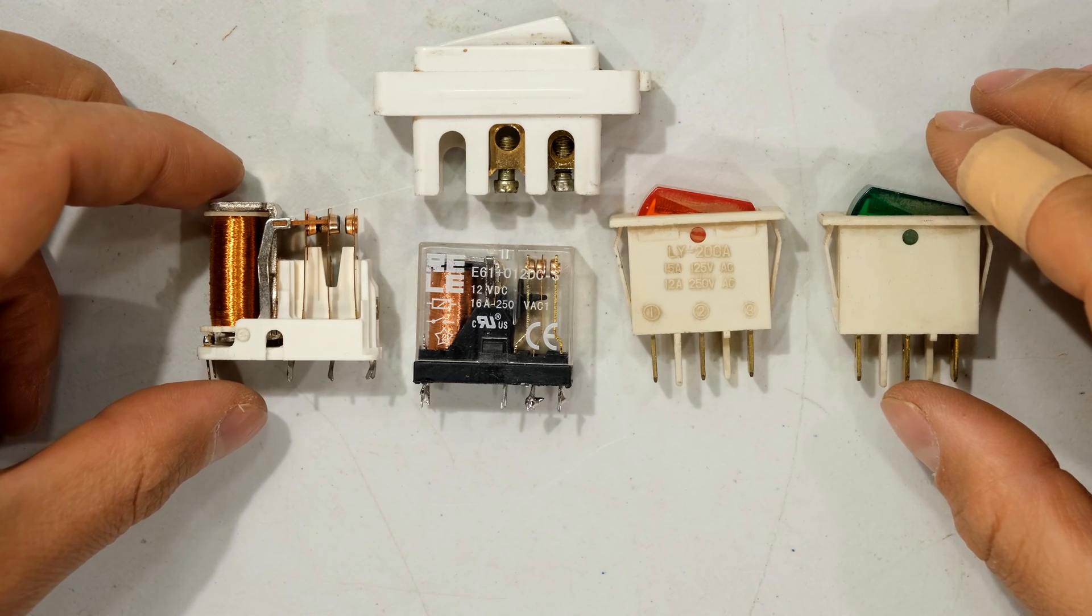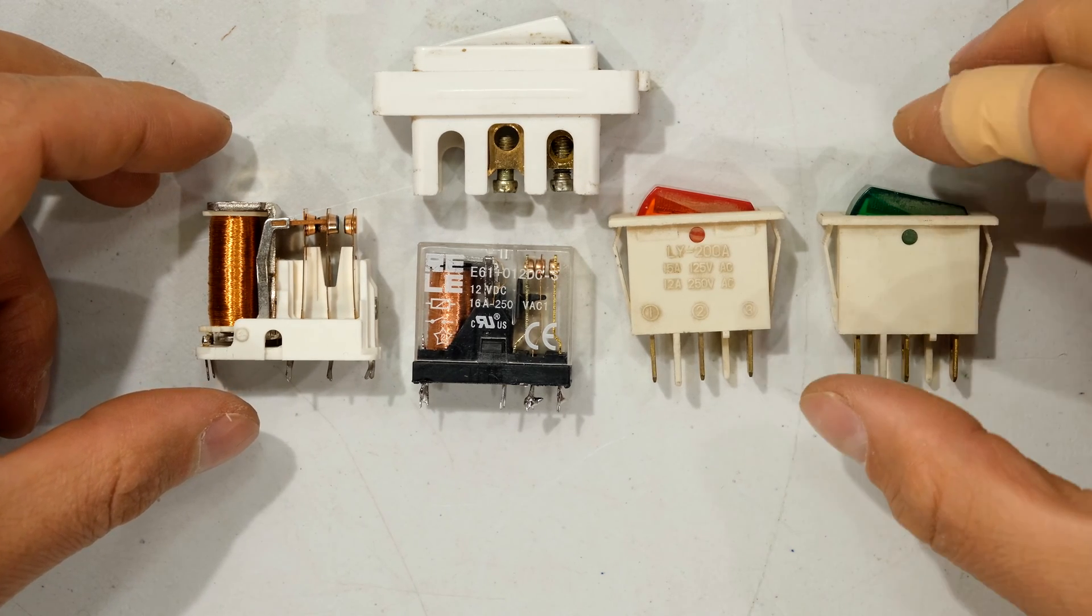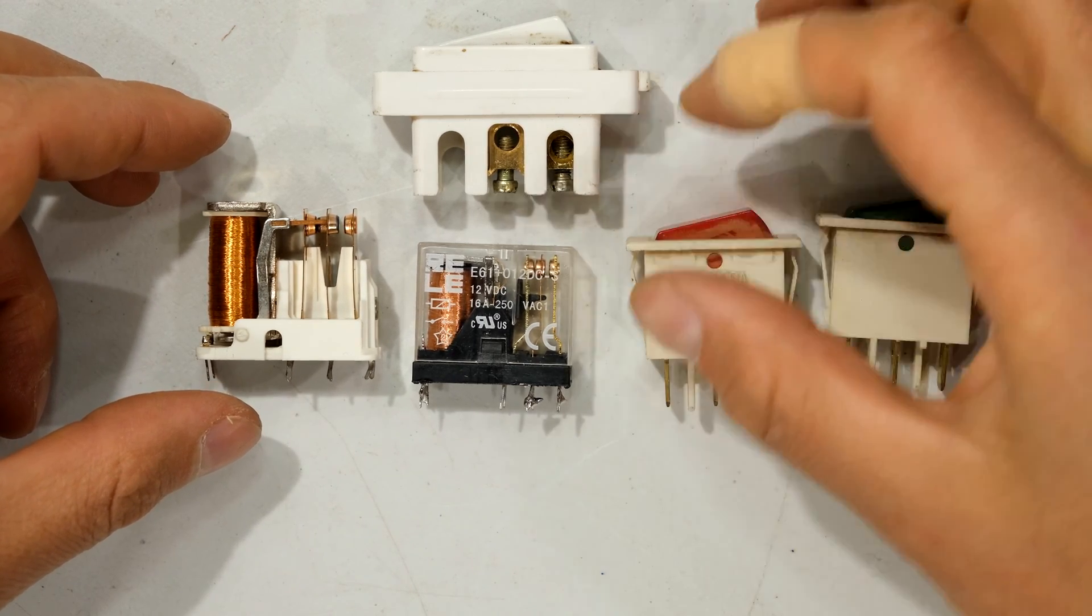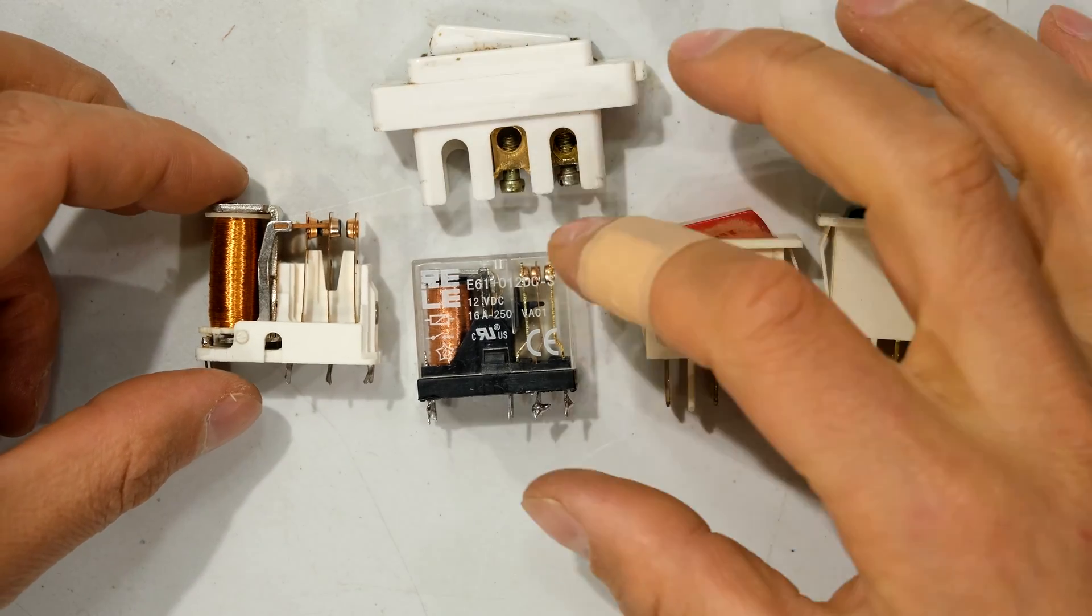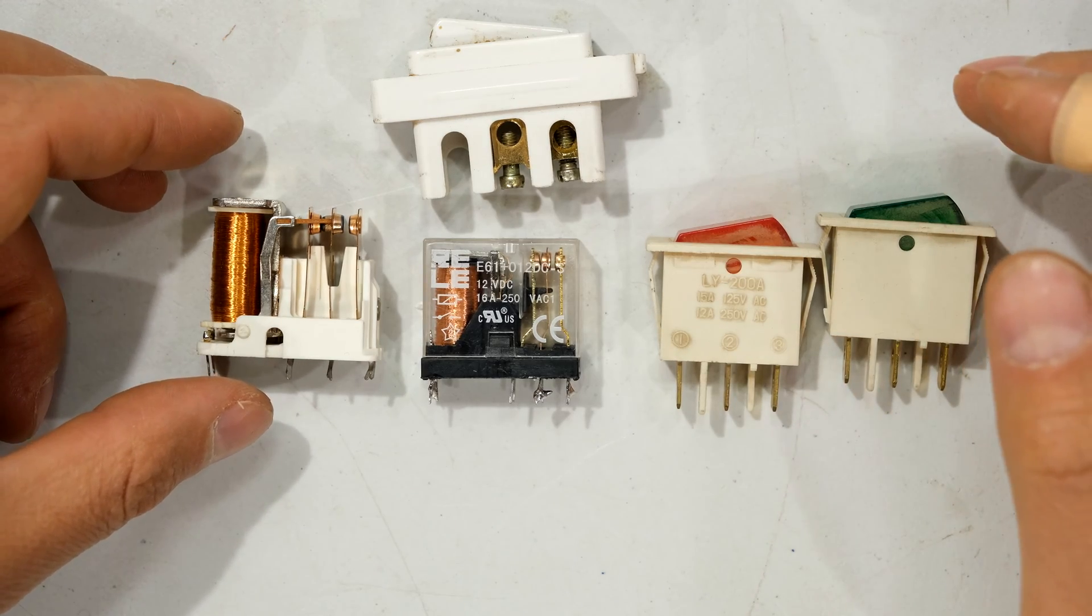Right so to sum up the main reasons we use a relay is we want to use one circuit to control another circuit. It stops us from having to manually go and operate switches when we can use electronic control or computer control to open and close circuits.